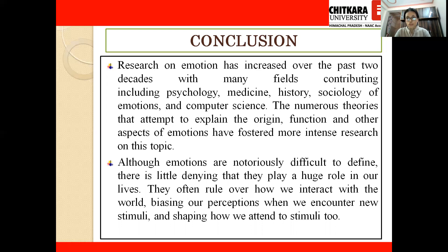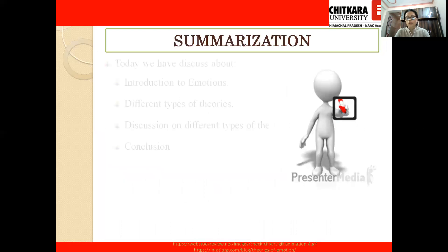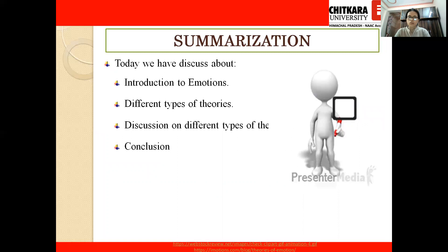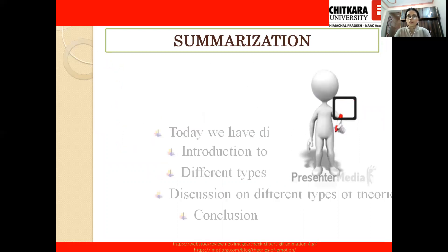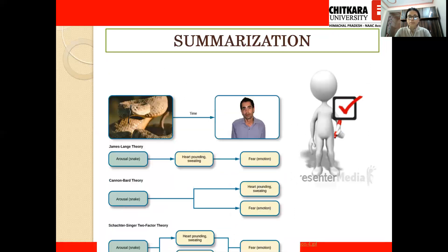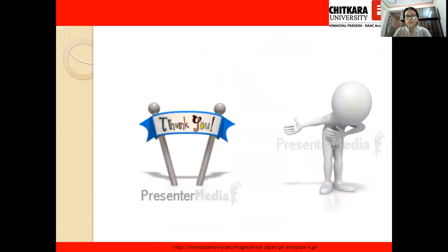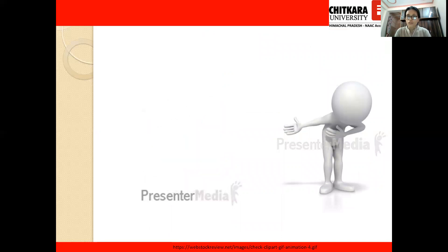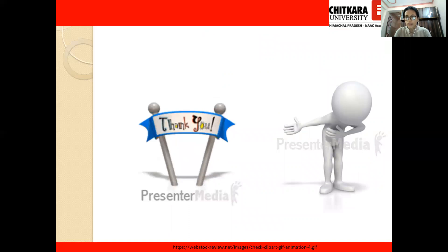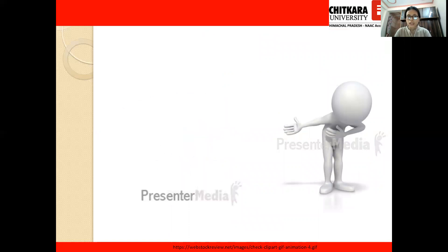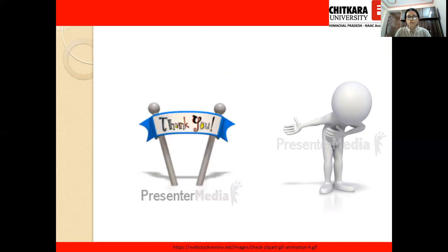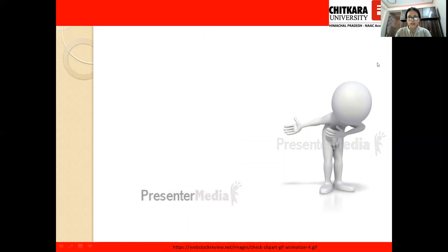Today we discussed a simple introduction to emotions and elaborated on three theories of emotion: the James-Lange theory, the Cannon-Bard theory developed after certain criticisms and limitations, and the two-factor Schachter-Singer theory, which is quite different from the previous two. I hope today's topic on theories of emotion was simple and clear. Thank you everyone, have a nice day, and let's meet in the next class.